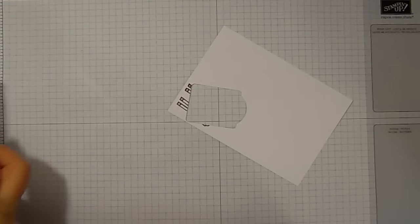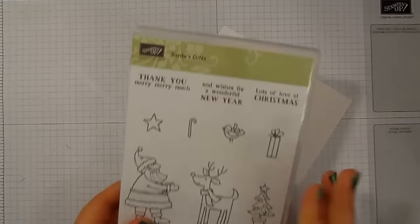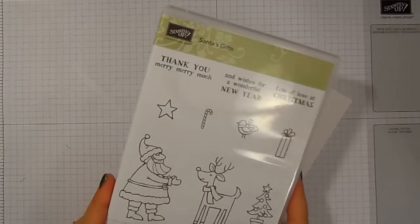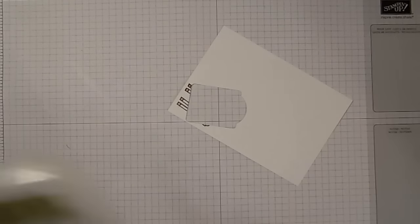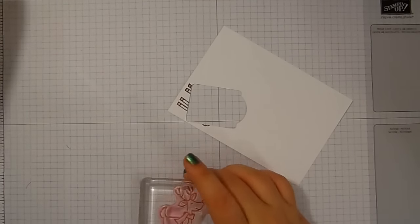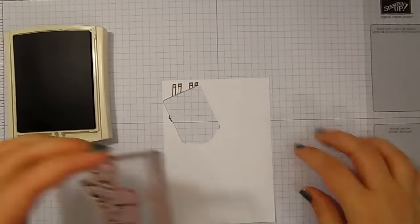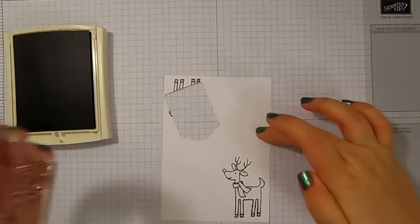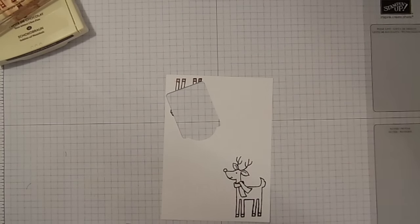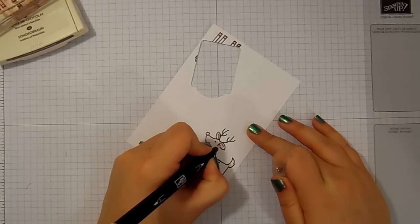This one I have added a little gift tag. I've got the Santa's gifts stamp set which is one of my absolute favourites from the Christmas stamp sets this year. This one's actually in the annual catalogue. I'm trying to think of how I can keep using it but I'm really struggling. I've got our little Rudolph and I'm going to ink him up in chocolate chip like so.